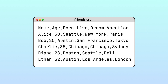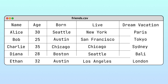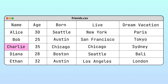Luckily, because CSV files are separated into rows and columns, they're often displayed as tables or spreadsheets. Now it's much easier to determine at a glance that Charlie lives in Chicago or that Diana wants to travel to Bali.